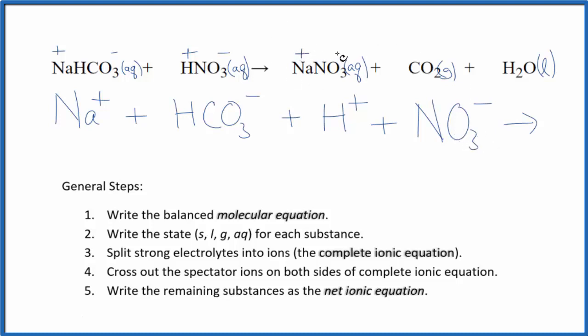For the products, we have a plus and a minus here. So Na plus, just like the reactants, and the nitrate ion, NO3 minus. We don't split gases apart, so we just have CO2, and we don't split liquids apart, so we have H2O.